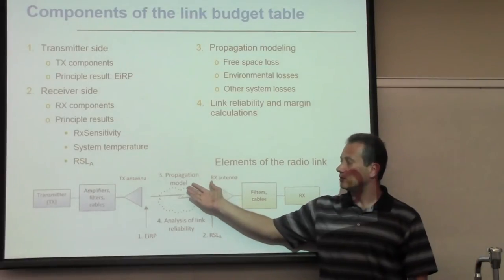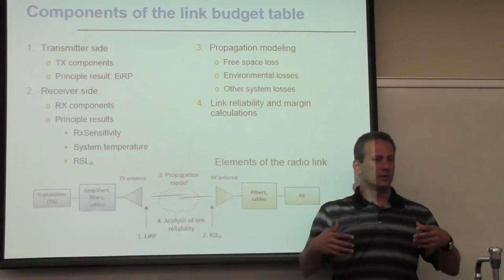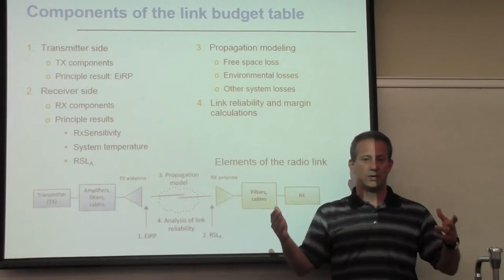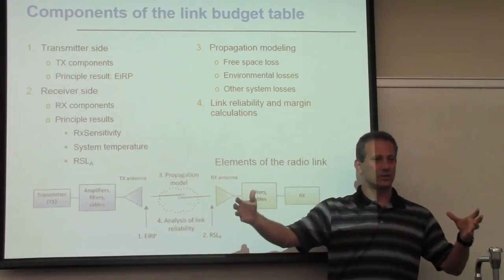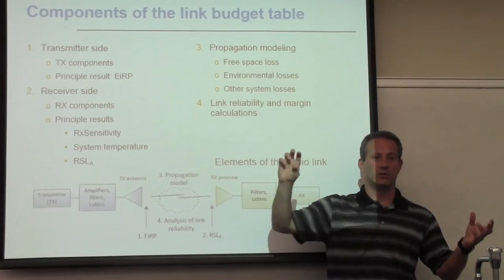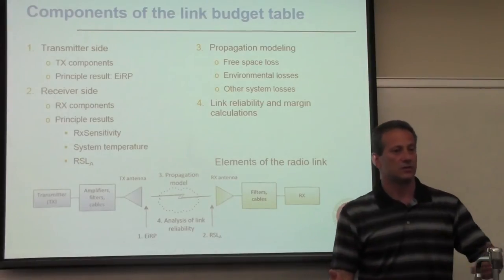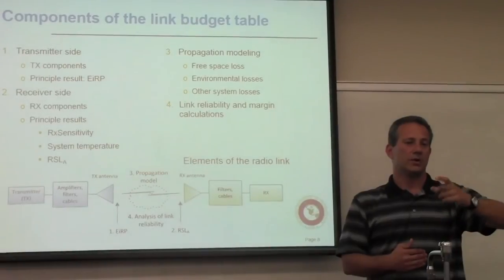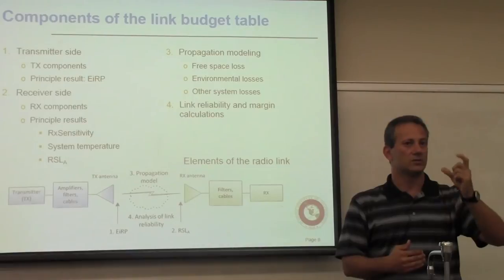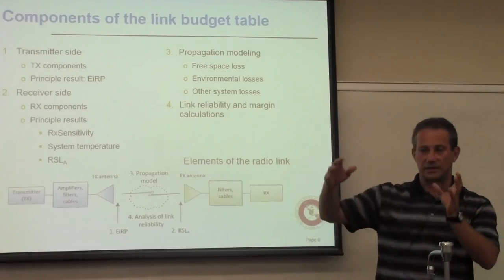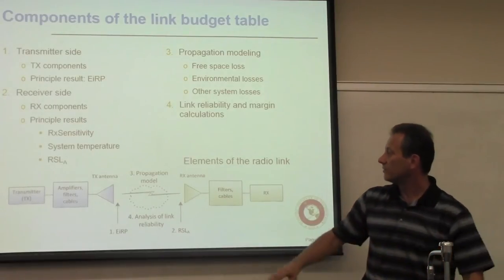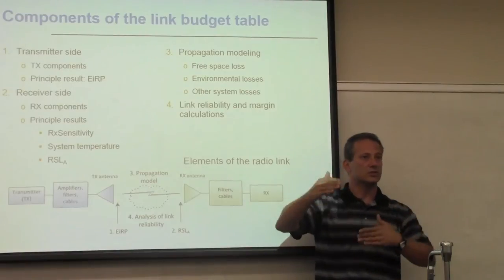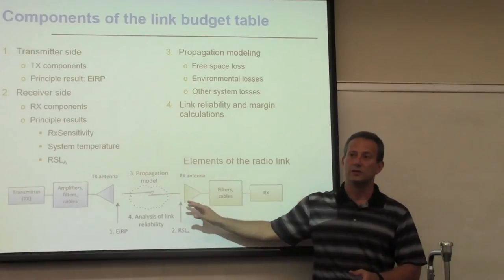You plug your path loss budget into a propagation model that predicts actual path loss. Every prediction model can predict part of the loss deterministically — for example, free space path loss — but there's always an uncertain component, such as weather. In satellite communications, rain, clouds, and atmospheric variability add a random component. Based on statistical properties, you determine what margin you need so that under adverse conditions your system still functions.